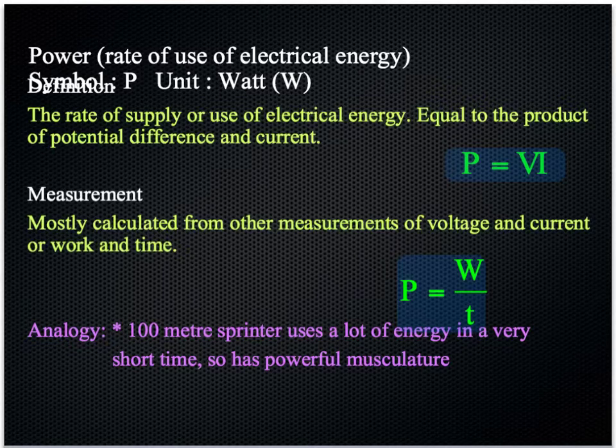Symbol is P, and the unit is the Watt, and the capital W for that unit. Definition of power is the rate of supply or use of electrical energy, equal to the product of potential difference and current.